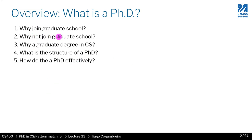In the next few videos, I'm going to talk about these five points. First, why should you join graduate school, which includes the master's program and the PhD program. Then I'll give you a few reasons not to join graduate school, so you understand whether it suits your needs. Next, why should you choose computer science as the subject of your graduate degree. Then we'll go through the structure of a PhD — expectations, what you should achieve, what your supervisor provides, and what you provide your supervisor. Finally, we'll talk about how to do a PhD effectively.